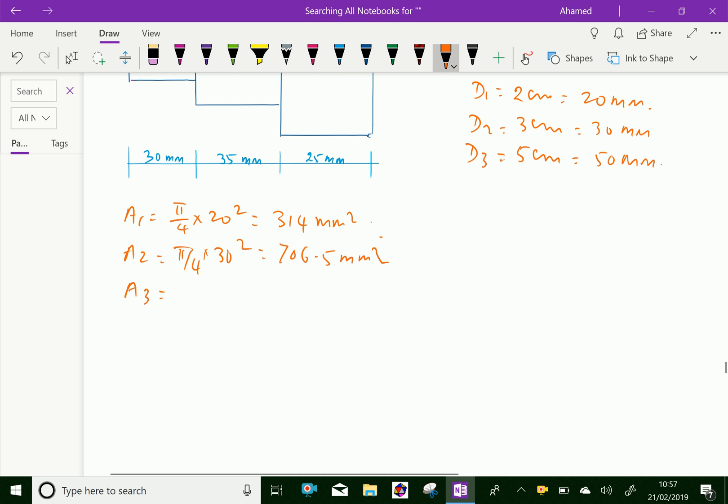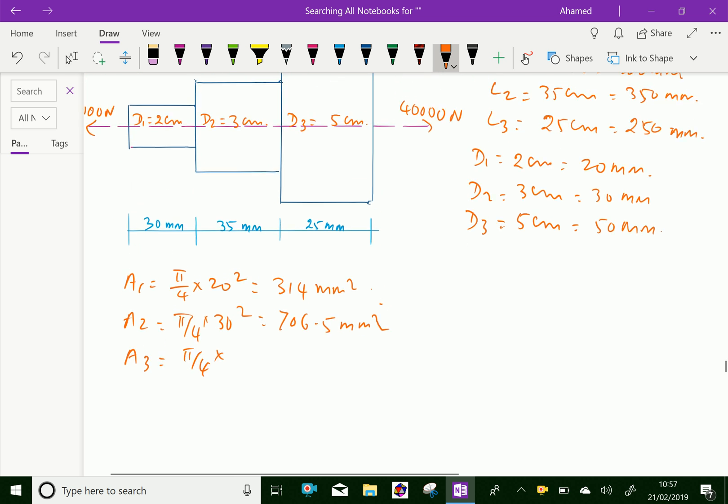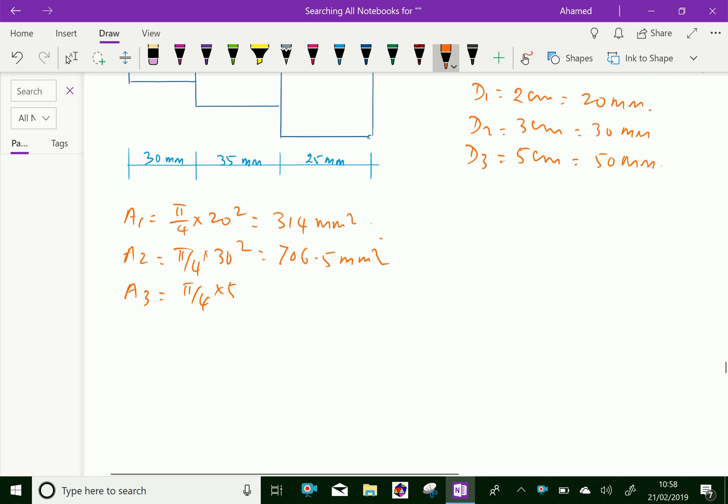A3 equal pi by 4 into 50 square, equal 3.14 into 50 square divided by 4, equal 1962.5 mm square.